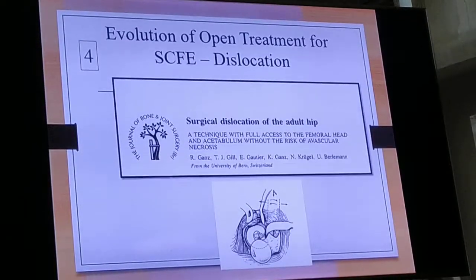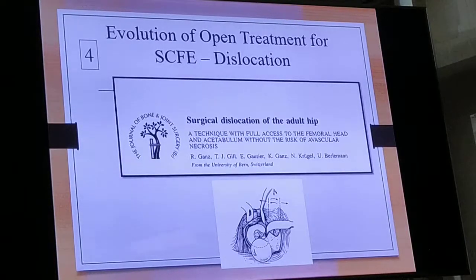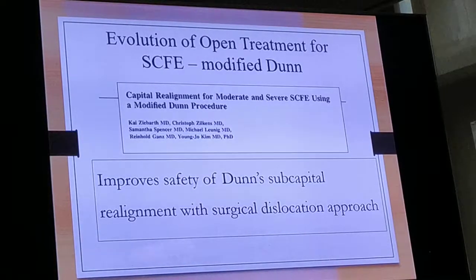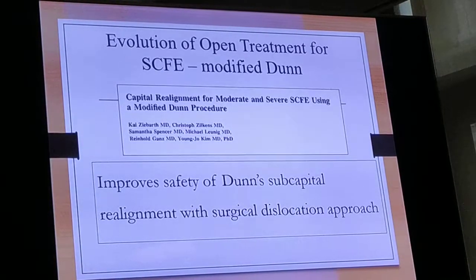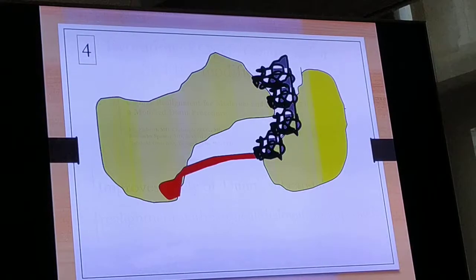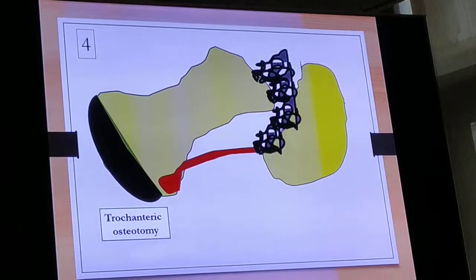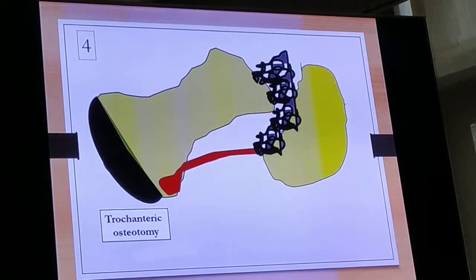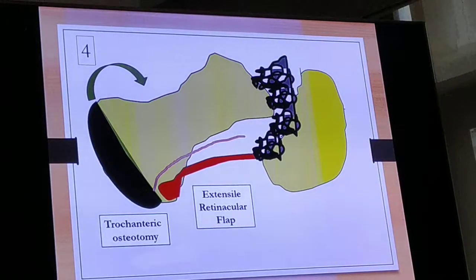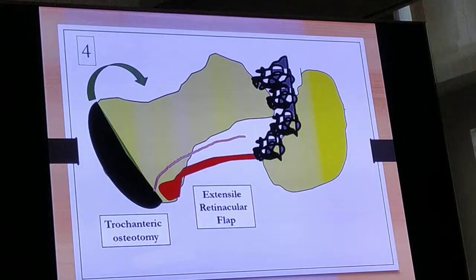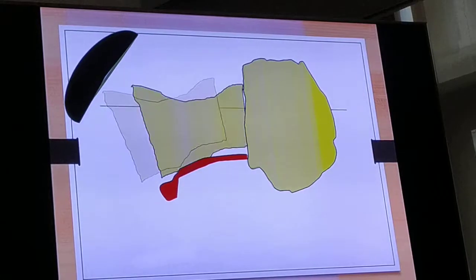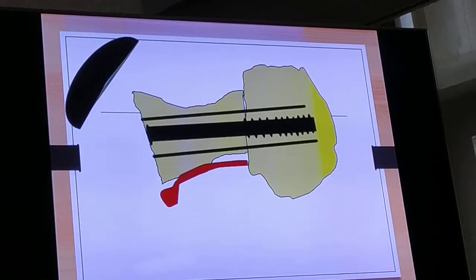The next evolution was described by Reinhard Ganz in 2001 as the safe surgical dislocation method, which was then modified by adding the Dunn procedure to create the modified Dunn method. You go laterally, perform a digastric trochanteric osteotomy, dislocate the femoral head, and create a retinacular flap that protects the posterior vasculature. You then remove the callus, shorten the head mildly, and fix it with a screw and wire.